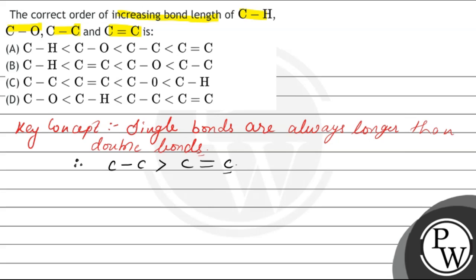Let's check the options. In Option A, carbon-carbon double bond is shown greater than carbon-carbon single bond, so this option is incorrect. In Option B, carbon-carbon single bond is greater than carbon-carbon double bond, so it may be right. In Option C, it is also wrong because carbon-carbon double bond is shown greater than carbon-carbon single bond. Option D is also wrong for the same reason.